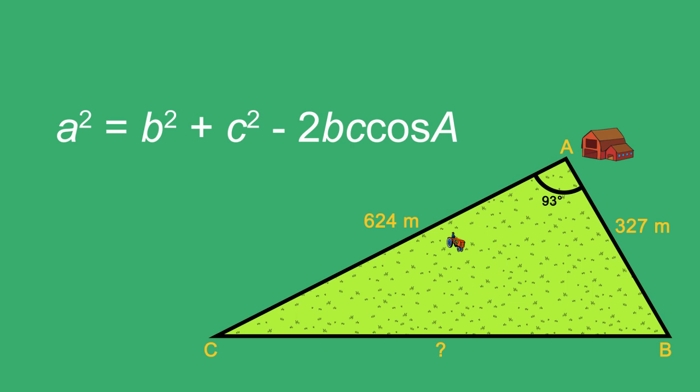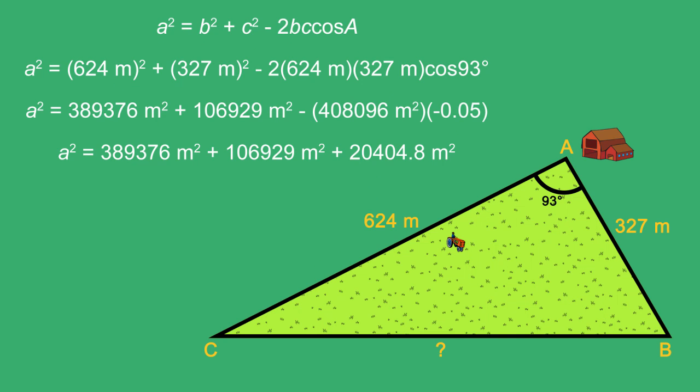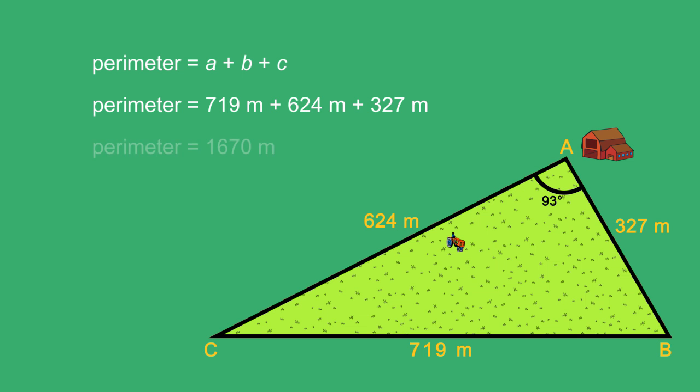Using law of cosines, A squared equals B squared plus C squared minus 2BC times the cosine of angle A. Substitute the known values and solve for A. Your class will need to build 1,670 meters of fence.